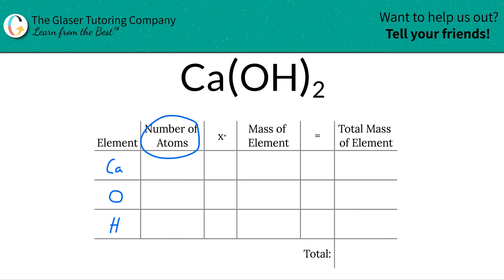Next thing is to identify the number of atoms, and that's where the subscripts come into play. So the subscript at the bottom here of calcium, it's not a zero, it is a one. So if nothing's written in there, it is a one. That means we have one atom of calcium.